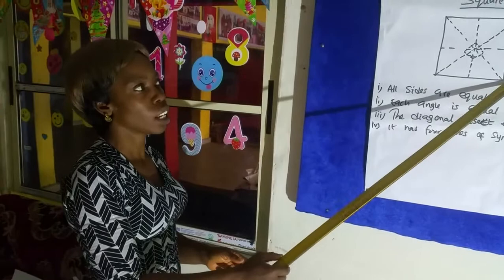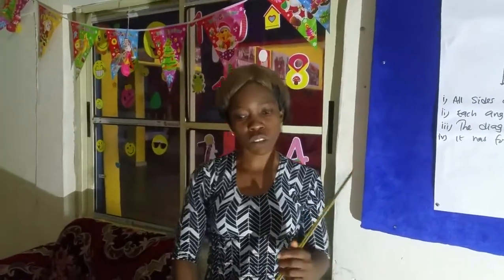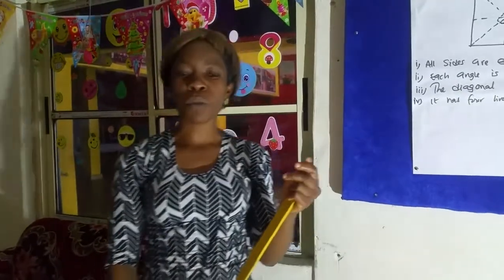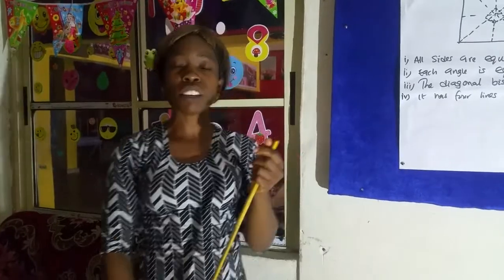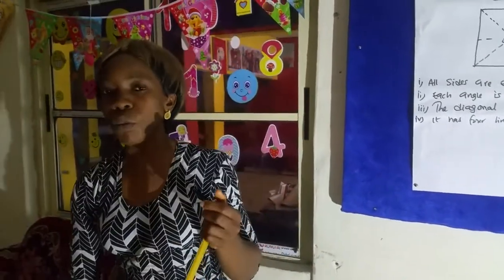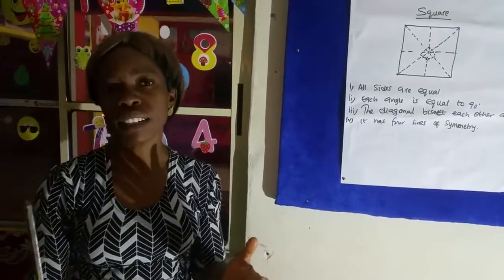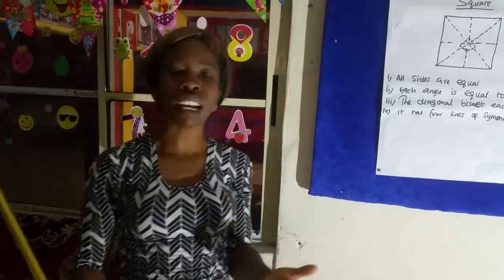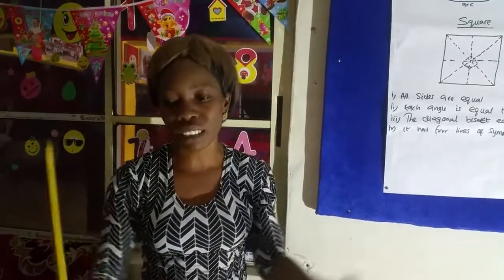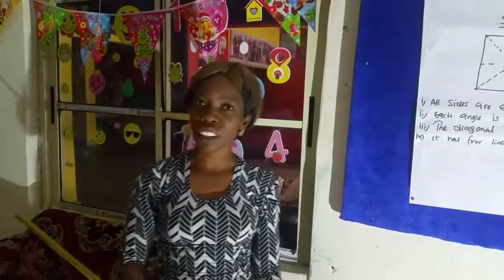Now, how to identify a square. Don't forget we started with defining what a plane shape is, then talked about the triangles: right angle triangle, isosceles triangle, scalene triangle, and equilateral triangle. Then we went to rectangle, circle, and square. I hope you enjoyed the class — thank you for listening, bye.